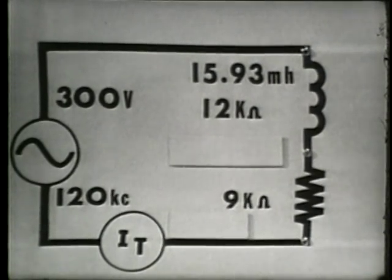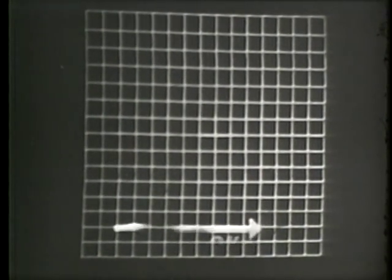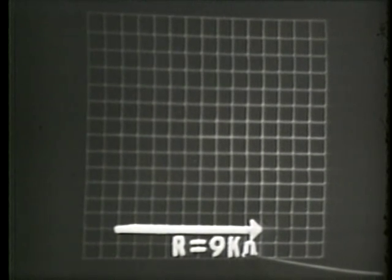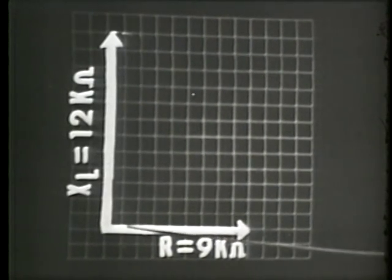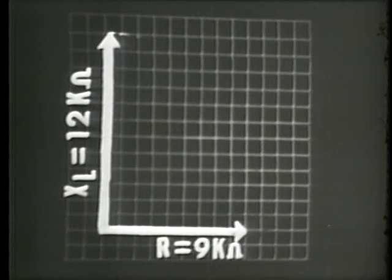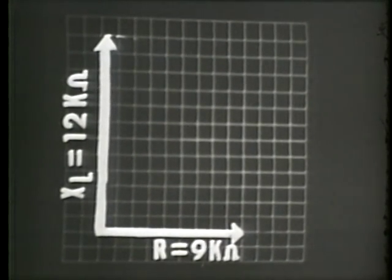Our next step is to plot these values as vectors on a graph. The resistance vector is plotted at zero degrees. If each block on our graph represents one thousand ohms or one K ohm, the resistance vector would be nine blocks long for the nine K ohms of resistance. Our next step is to plot the 12 K ohms of inductive reactance. This 12 K ohms of X of L is plotted at 90 degrees.